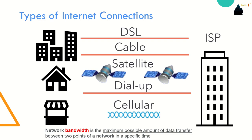Types of home and small office internet connections include DSL, cable, satellite, dial-up, and cellular. DSL, or Digital Subscriber Line, provides high bandwidth and high availability, and an always-on connection to the internet; it runs over a telephone line. Small office and home office users typically connect using DSL or ADSL. Cable, offered by cable television service providers, transmits internet data and signal on the same cable that delivers cable television, providing high bandwidth, high availability, and an always-on connection.